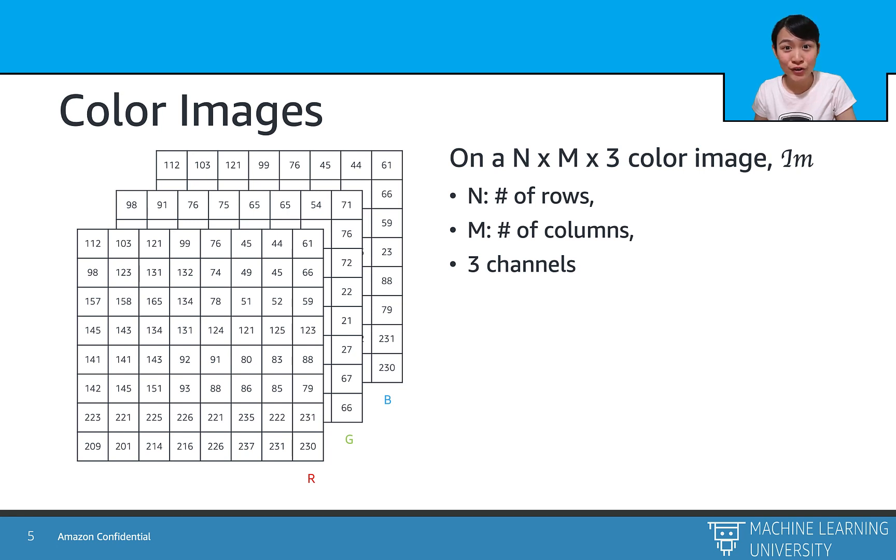To query a value of this matrix, we need three indexes: the i, which row the pixel is at; the j, which column the pixel is at; and the c, which channel of the RGB it is in.